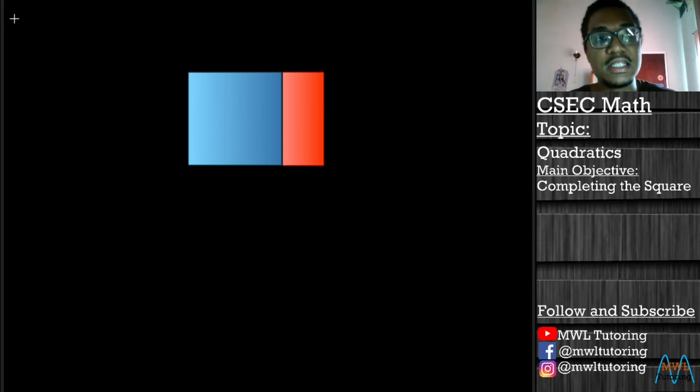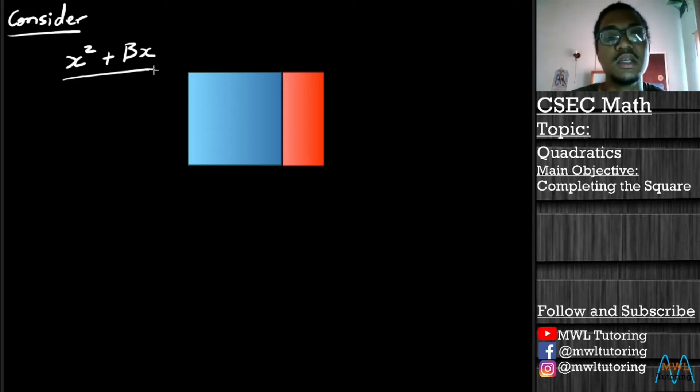So let's consider an example of a quadratic. It's going to look something like x² + Bx. And what we want to do is we want to convert this math language here, the numbers, the letters and the squared and all those things, we want to convert this into the diagram format.